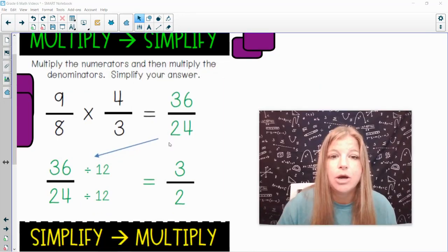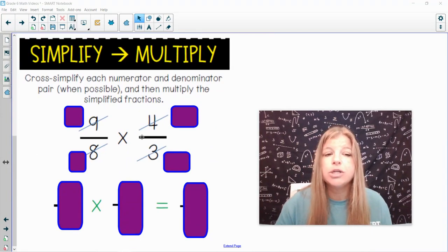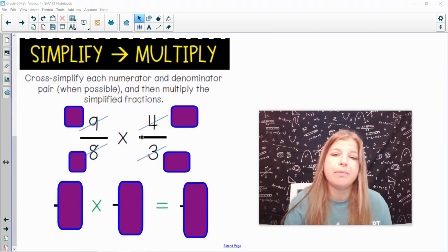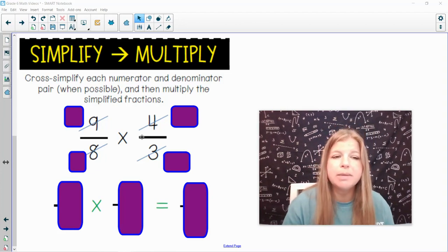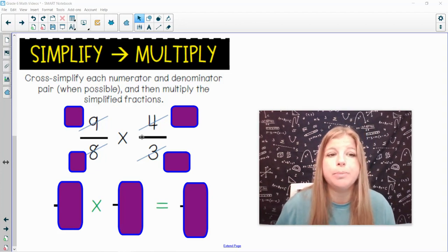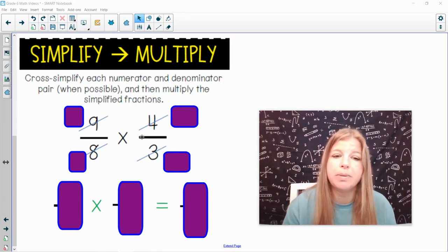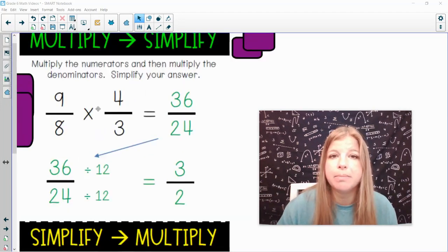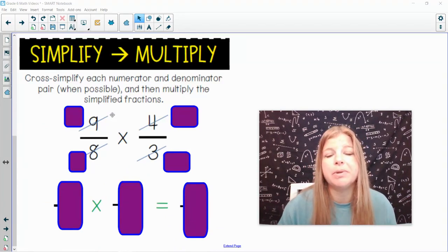In the second half of this lesson, we're going to learn how to simplify first now. So I could look at fractions, and you see I have them already crossed out, and that'll be a little spoiler, but it's okay. It says cross-simplify each numerator and denominator pair when possible, and then multiply the simplified fractions. So I could multiply this straight across. In fact, this is actually the same exact problem as the problem that I did first in the video with you.